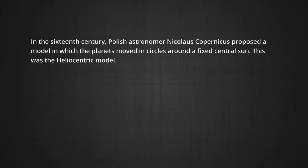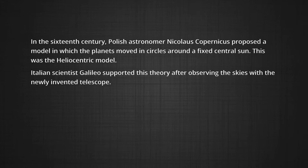In the 16th century, Nicholas Copernicus proposed a model in which the planets moved in circles around a fixed central sun. This was the heliocentric model. Galileo supported this theory after observing the skies with the newly invented telescope.